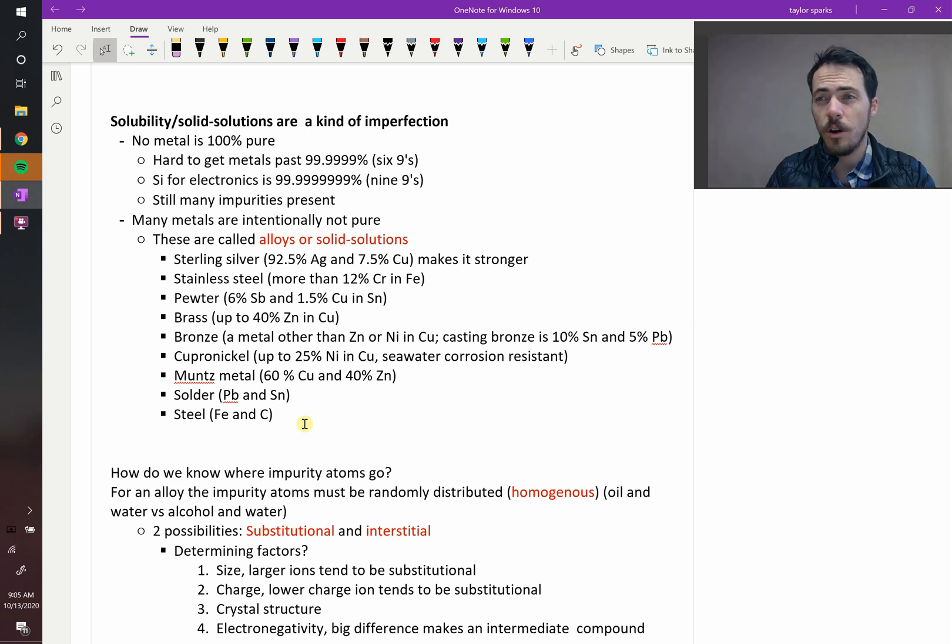It is really hard to get metals past 99.9999% pure, that's six nines. And for electronics, in the electronics industry, when they make circuit boards and things, they're typically using silicon which has been purified to 99.999999% pure, so that's incredibly pure.